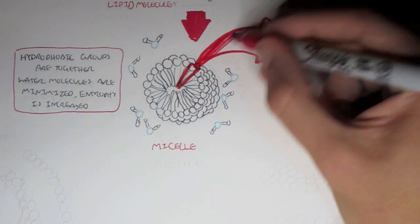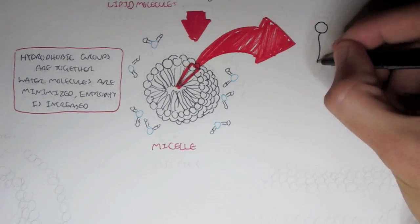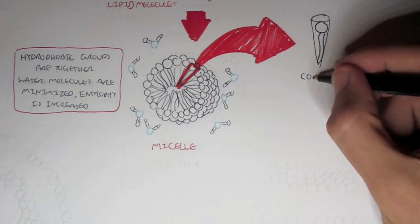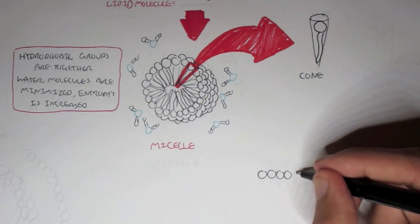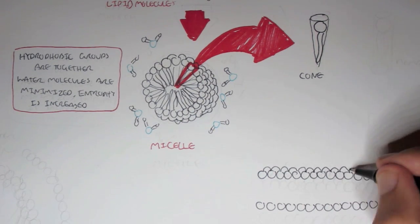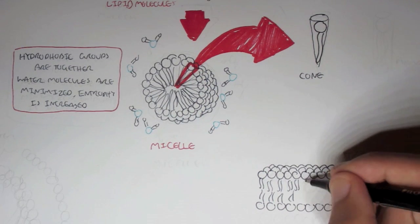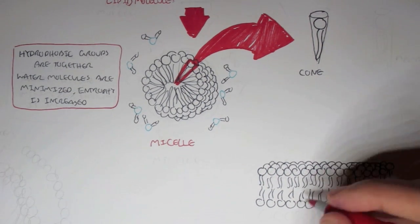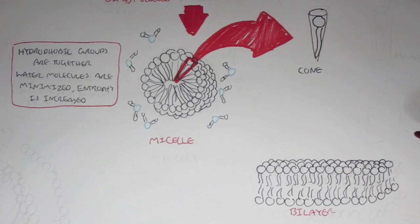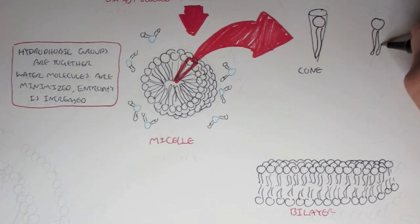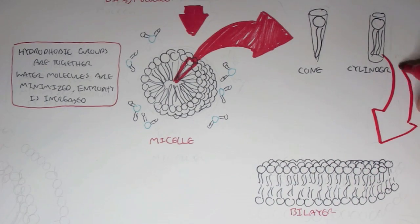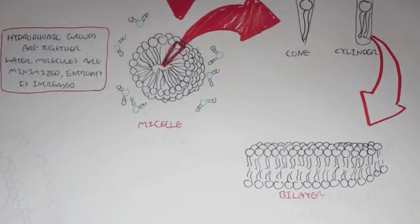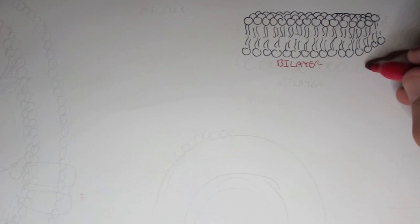So now if we have many clusters of lipid molecules and we basically connect them up all together, it will form this sort of shape where all the hydrophobic regions that hate water will be inside and all the hydrophilic regions will be outside, forming what's called a micelle. And the hydrophobic groups are together and the water molecules are minimized so entropy is increased. So looking at one of these structures, this is a cone looking structure, not like the previous cylindrical structure. And the cylindrical structure is from the bilayer, the membrane bilayer.